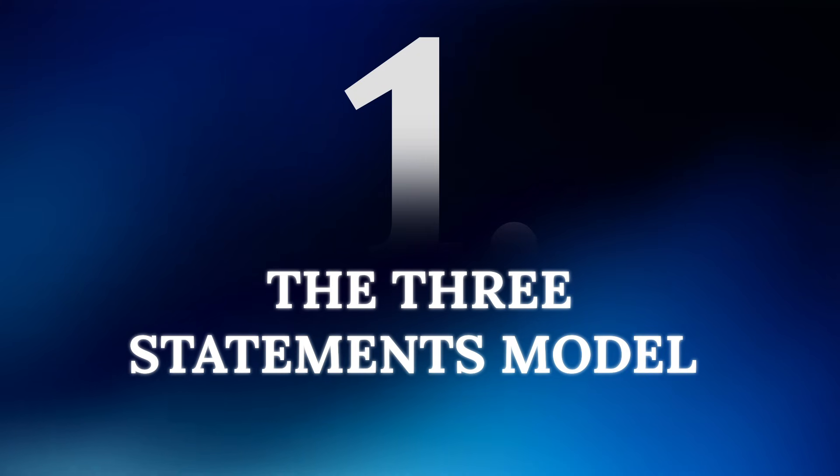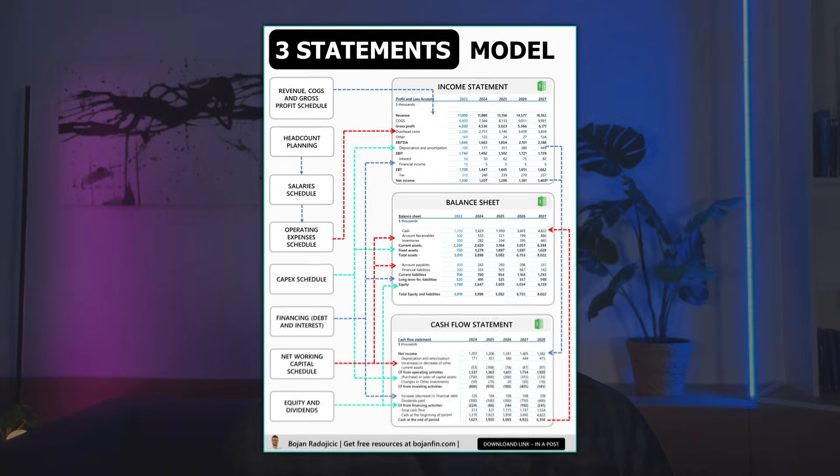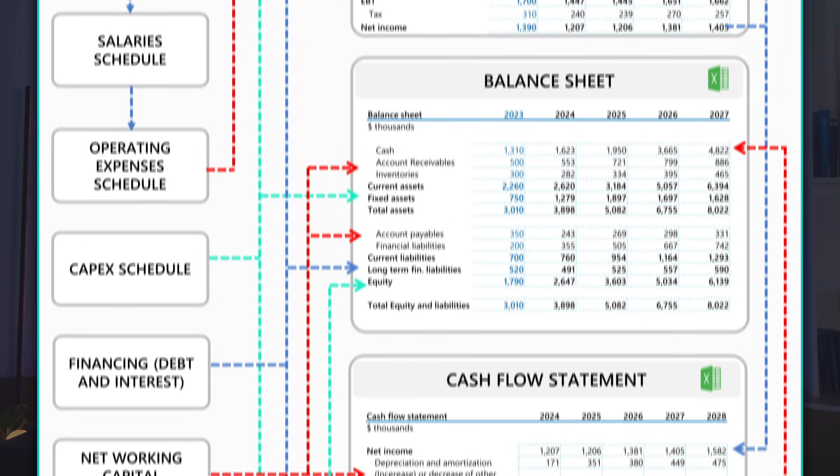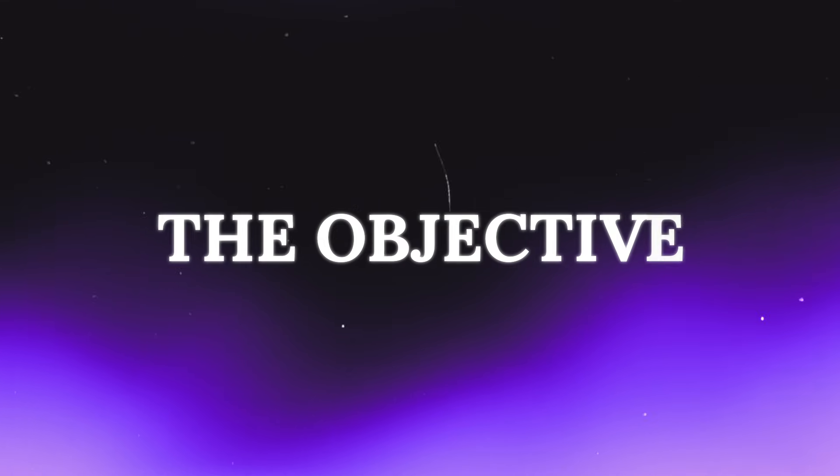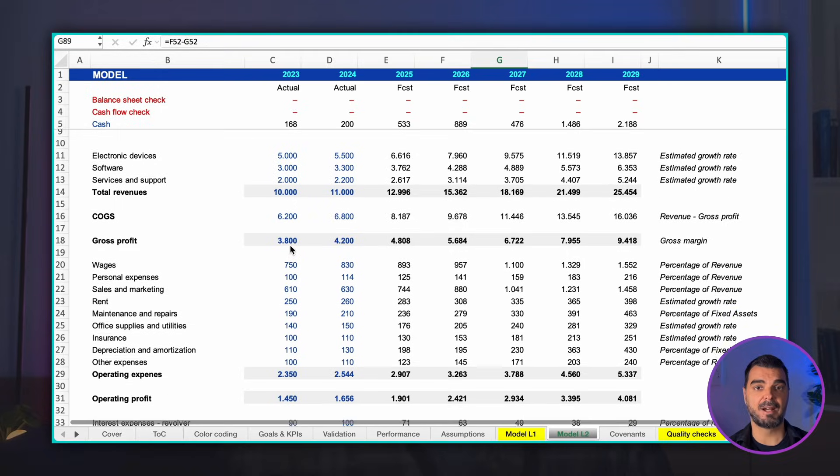The three statements model is the absolute cornerstone of financial modeling. You cannot build complex transactions or detailed valuations until you master this foundation. The goal is simple but powerful: it integrates the income statement, the balance sheet, and the cash flow statement into one dynamically connected financial model.